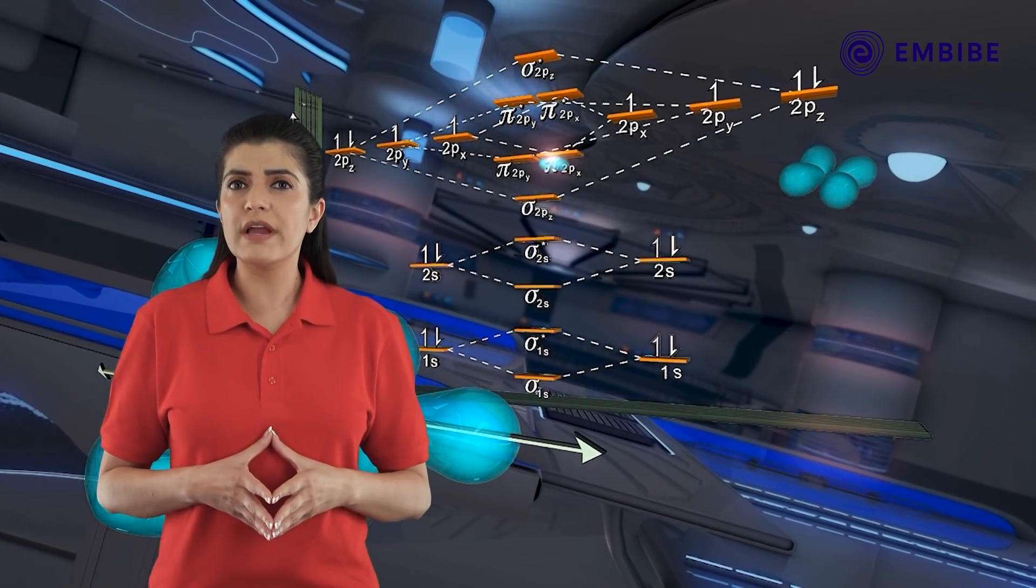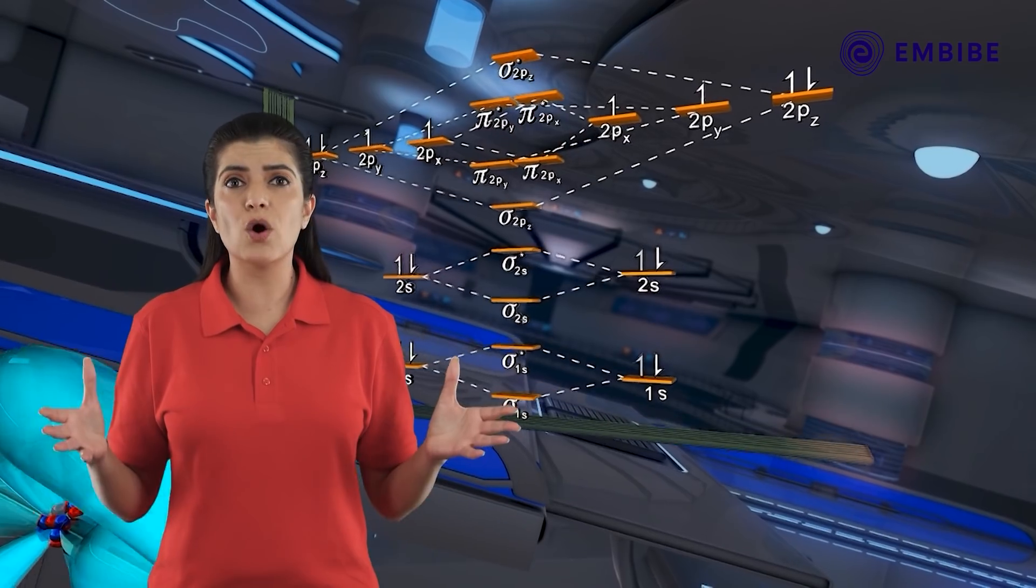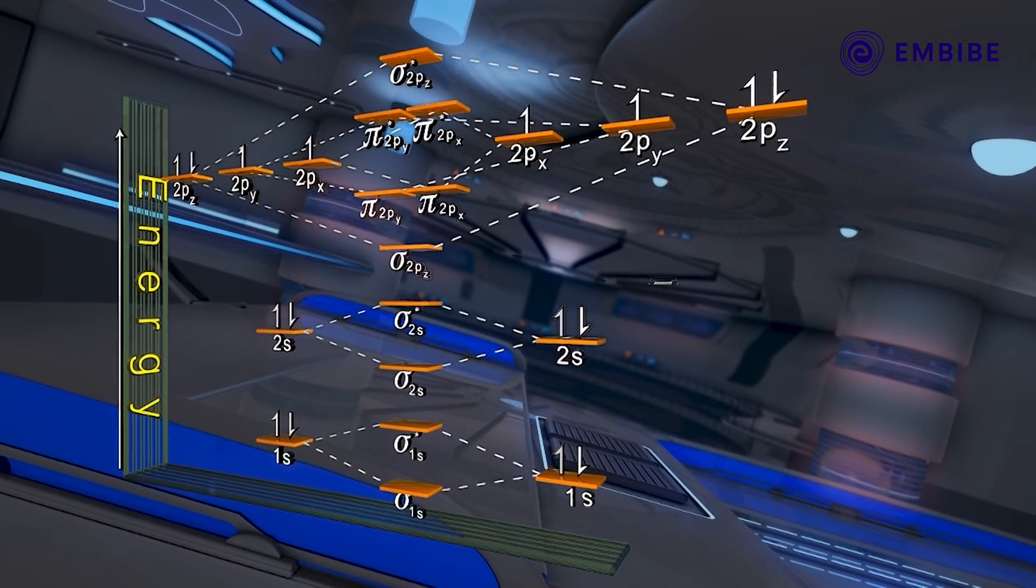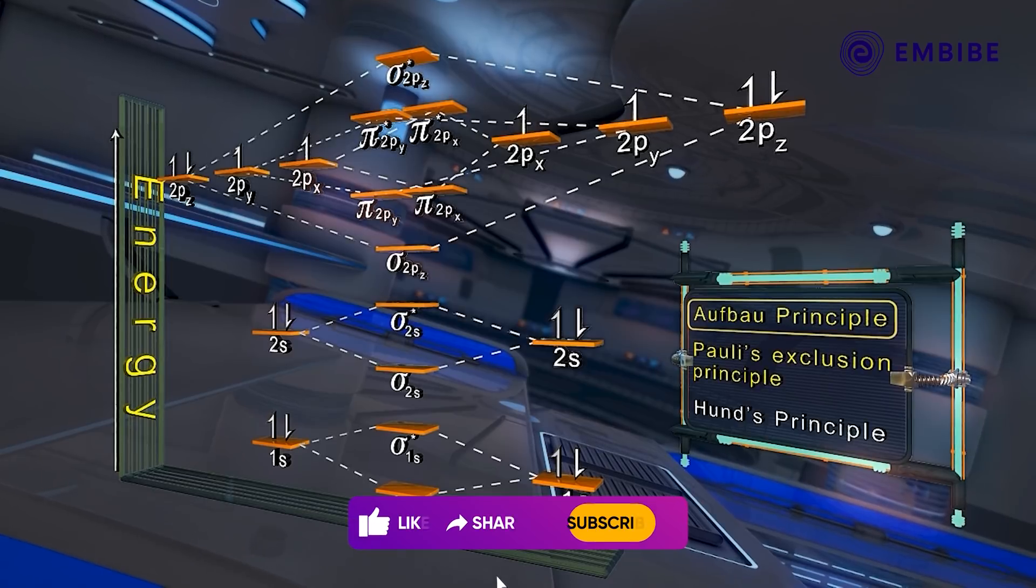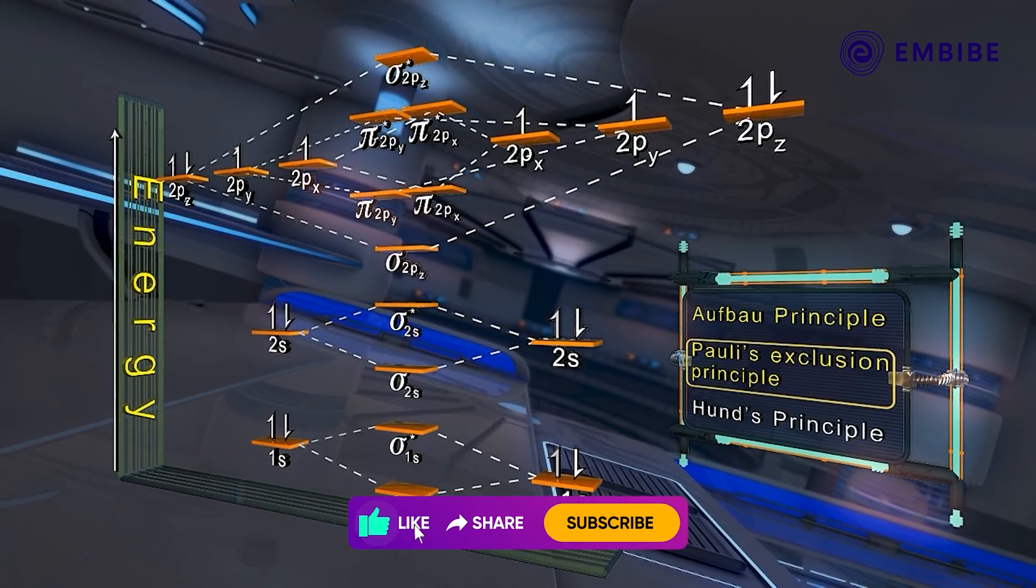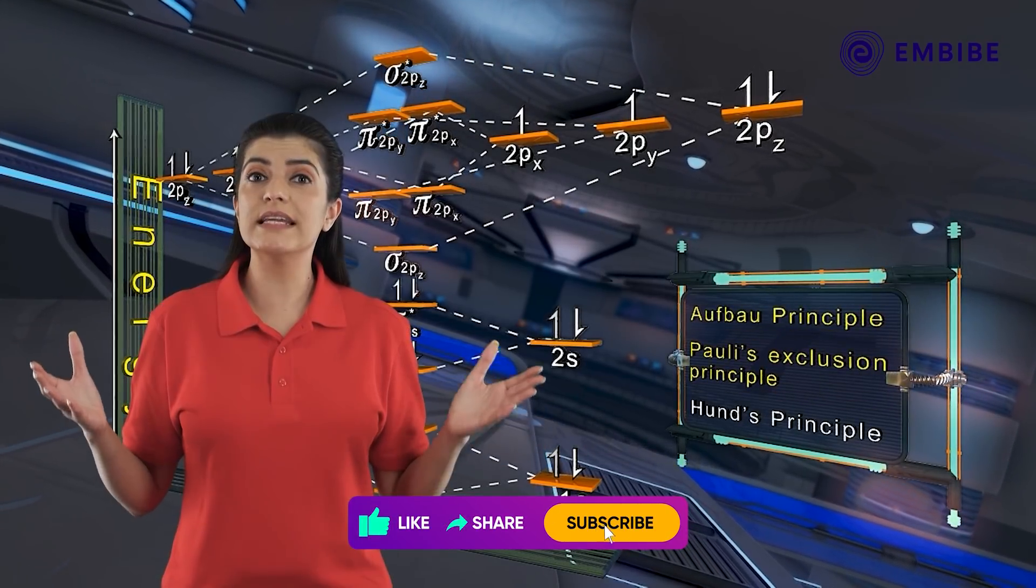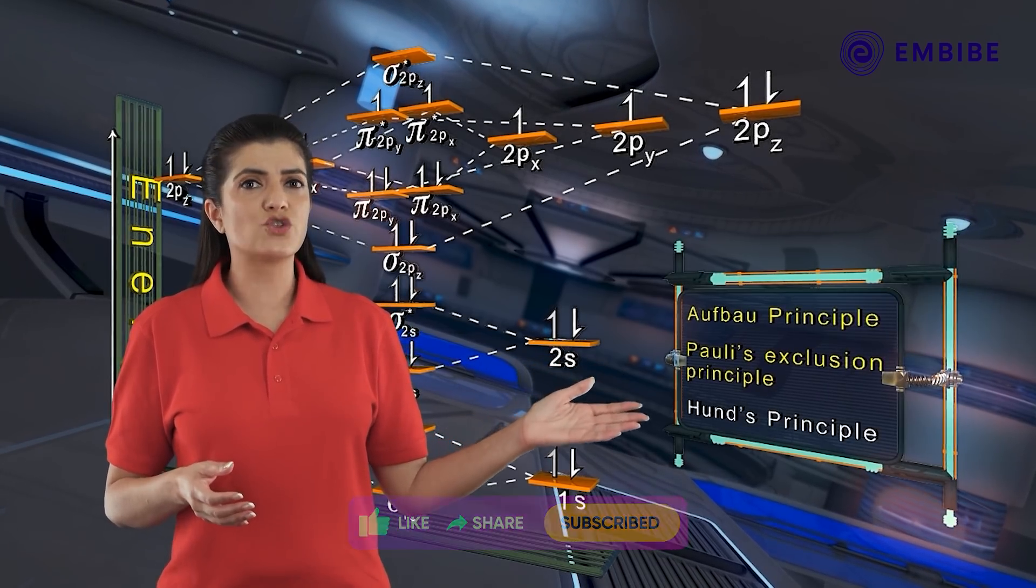The order of energy of the π2p molecular orbitals of oxygen is as shown. Electrons can be accommodated in these molecular orbitals in accordance with the Aufbau and Pauli's principles. The resulting electronic configuration of O₂ is as shown.